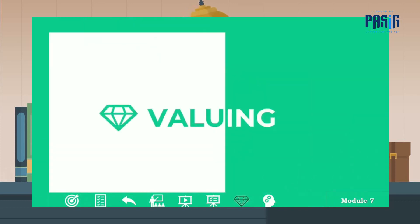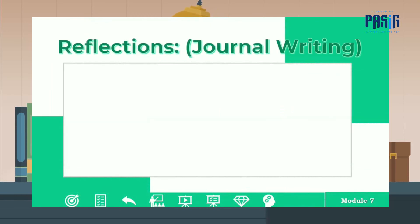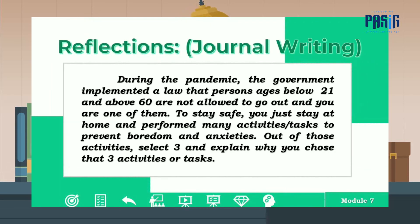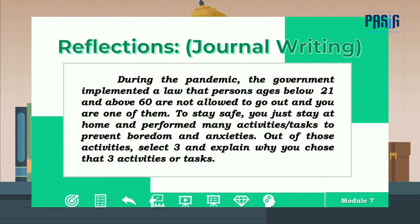For our valuing, here is a reflection about this situation. During the pandemic, the government implemented a law that persons ages below 21 and above 60 are not allowed to go out, and you are one of them. To stay safe, you just stay at home and perform many activities or tasks to prevent boredom and anxieties. Out of those activities, select three and explain why you chose those three activities or tasks. Write your output in your journal notebook.